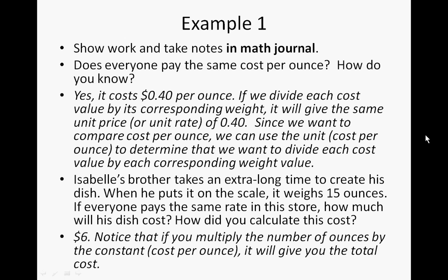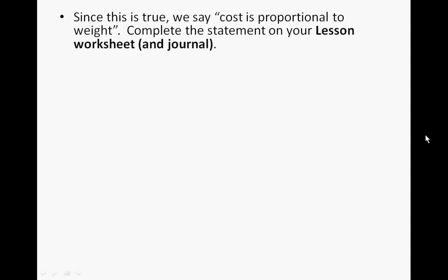You should have come up with $6. Notice that if you multiply the number of ounces by the constant — which is the unit rate, or the cost per ounce, which was 40 cents — it's going to give you the total cost. Since this is true, we say cost is proportional to the weight. Go ahead and complete the statement on your lesson worksheet that cost is proportional to weight, and make sure you write this in your journal also.